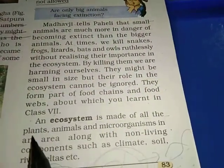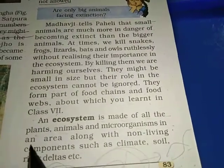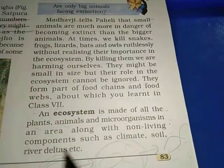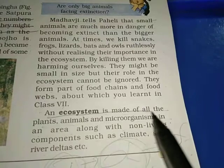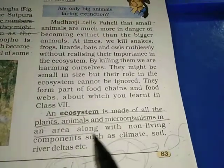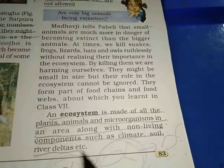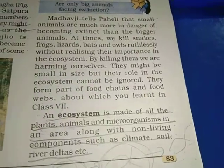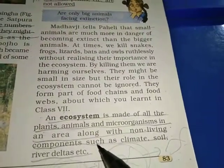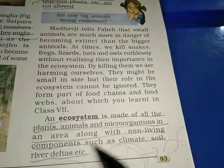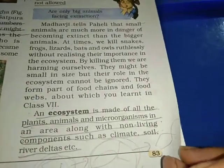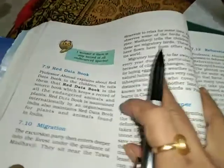An ecosystem is made of all the plants, animals and microorganisms in an area along with non-living components such as climate, soil, river, deltas, etc. An ecosystem consists of both living and non-living components together. They are having inter-relationships with each other - the soil, climate, water, all relate to the animals there, and animals are dependent on each other. So all these form the ecosystem - the inter-relationships between the flora and fauna in a particular place along with the climatic conditions is called the ecosystem.